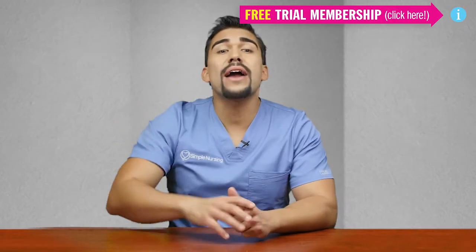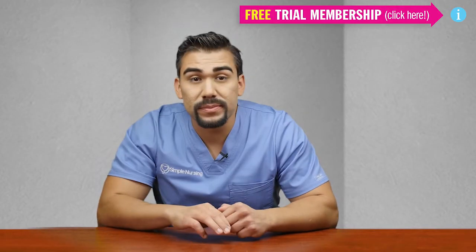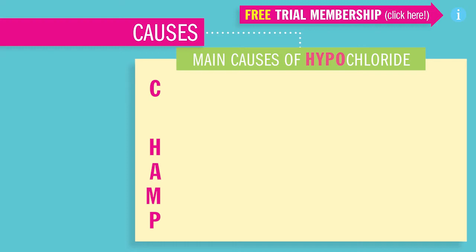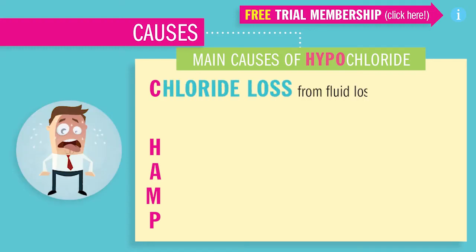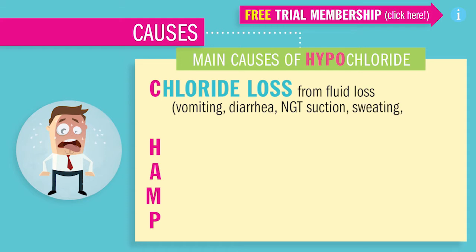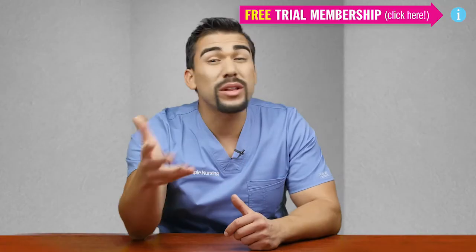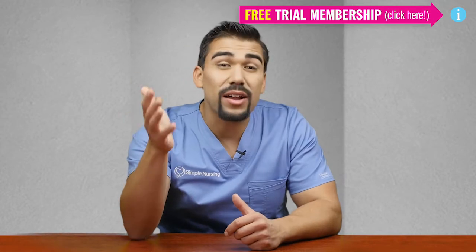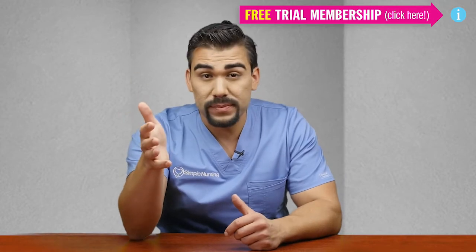We use the acronym CHAMP. C stands for Chloride loss from fluids such as vomiting, diarrhea, or NG tube suctioning in excess. Also sweating, fevers, or burns — it really wastes a lot of Chloride.